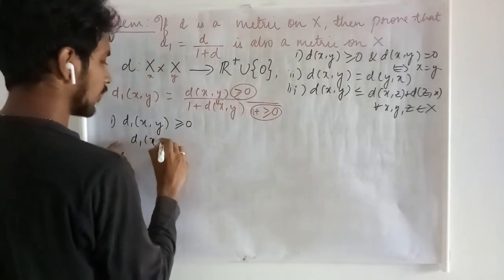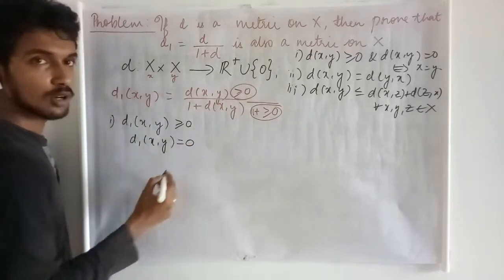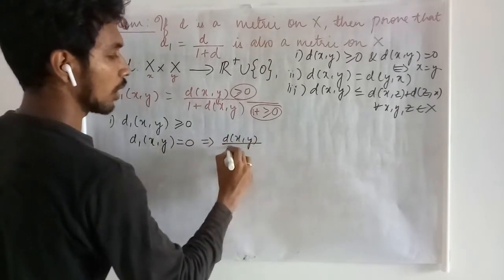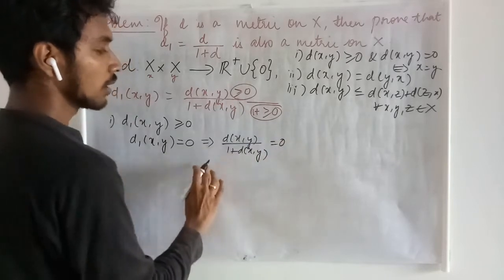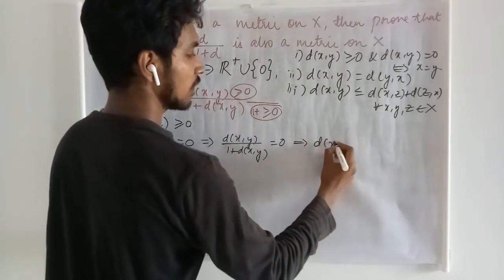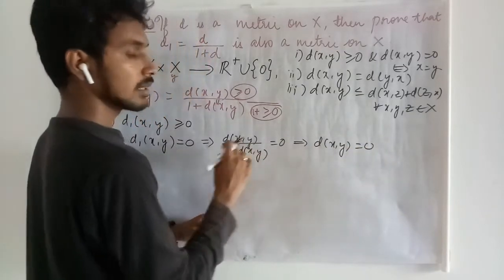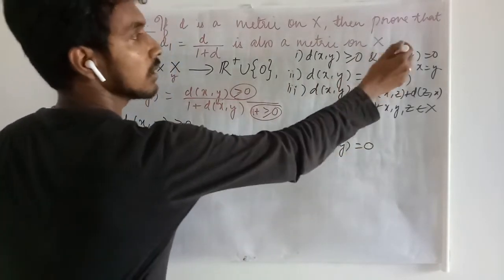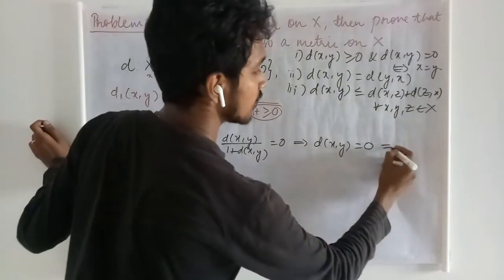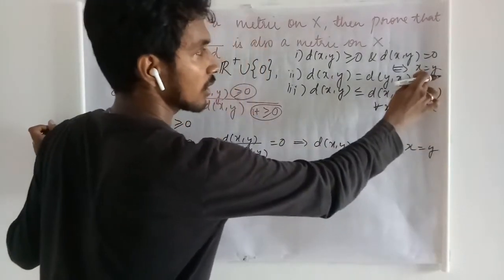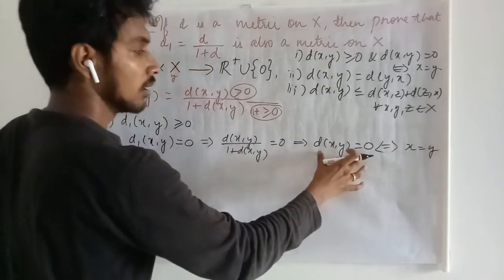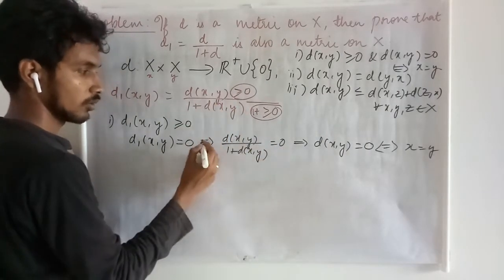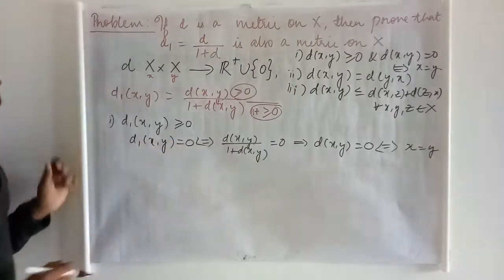Now let us state that D1(x,y) = 0. If D1(x,y) = 0, this tells me that D(x,y) upon 1 plus D(x,y) = 0. This tells me that D(x,y) = 0, because the denominator cannot be 0. Now if this is the case, then using this condition, we can say this implies x and y are the same. And if x and y are the same, then D(x,y) = 0, which gives D(x,y) upon 1 plus D(x,y) = 0, and this implies D1(x,y) = 0.